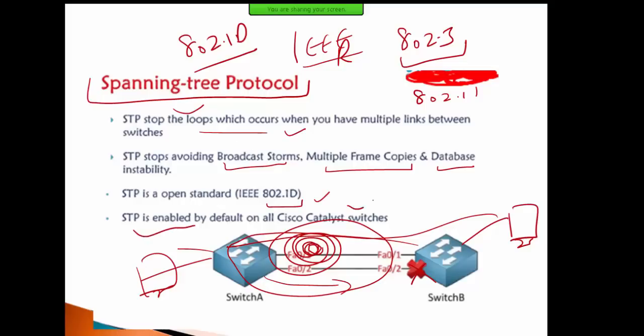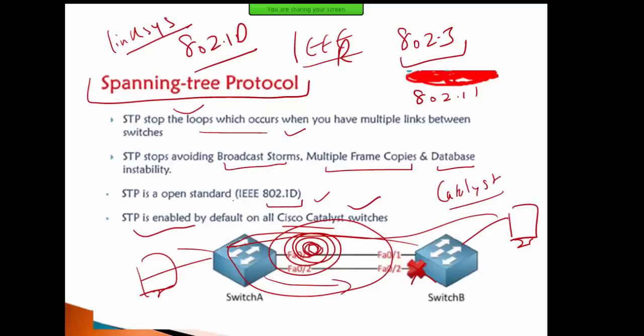STP is enabled by default on Cisco switches — specifically Cisco Catalyst switches. Catalyst is a company that Cisco acquired. You can see how it works by checking on your device.